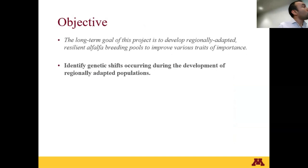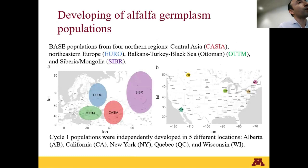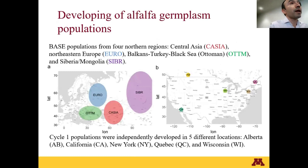This project is part of a large project that involves generating different populations regionally adapted to improve different traits of alfalfa. In this part, I am focusing on identifying the genetic changes during the development of these adapted populations. To follow the presentation, it's important to define where the populations were selected. The map on your left shows several dots indicating the regions where the germplasm was selected to generate the base populations.